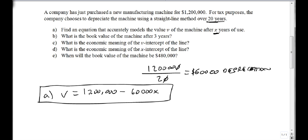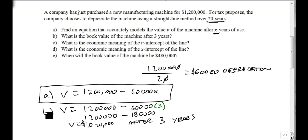Part B wants to know the book value after 3 years. Let's plug 3 in. V equals 1.2 million minus 60,000 times 3. That's 1.2 million minus 180,000, which equals $1,020,000 after 3 years. We got that by plugging in the 3 and evaluating it.